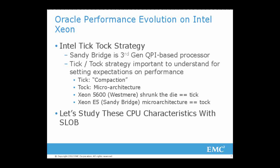Sandy Bridge architecture brings PCI controllers directly onto the processor. The only reason they were able to put that Tock — that microarchitecture change — in there was because the previous Tick shrunk the die from 45 nanometers to 32 nanometers, made some room, and then over the next 12 to 18 months they take advantage of that additional room. Westmere EP, Xeon 5600, was a Tick because they shrunk the die from Nehalem's 45nm to 32nm. Sandy Bridge is yes — microarchitecture.